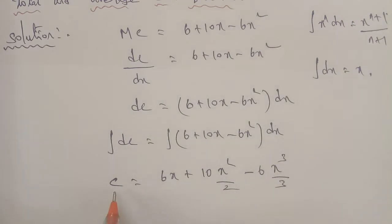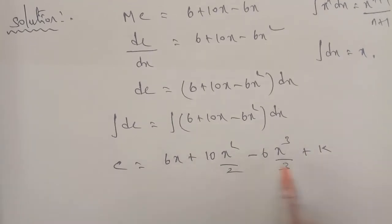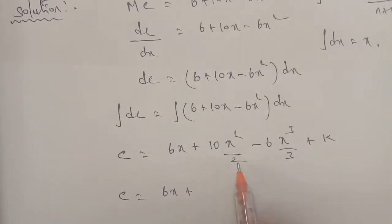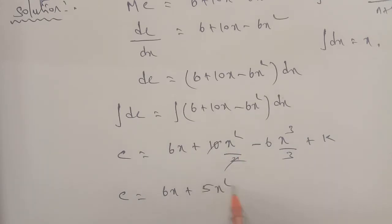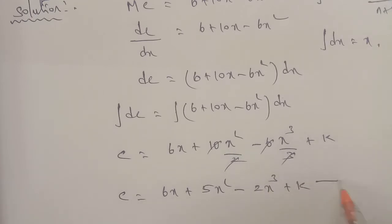Adding the constant of integration: the left-hand C and right-hand constant combine. After simplification, the total cost function is C equals 6x plus 5x square minus 2x cube plus k.